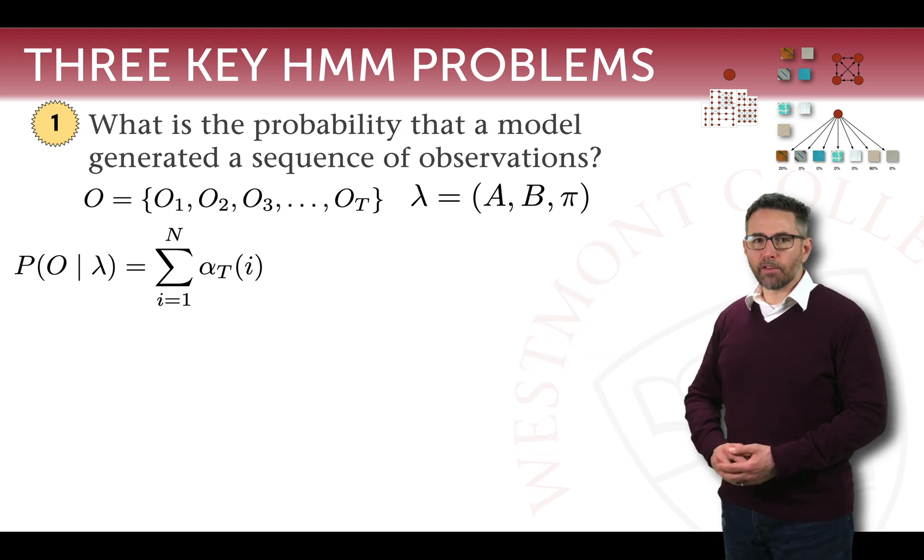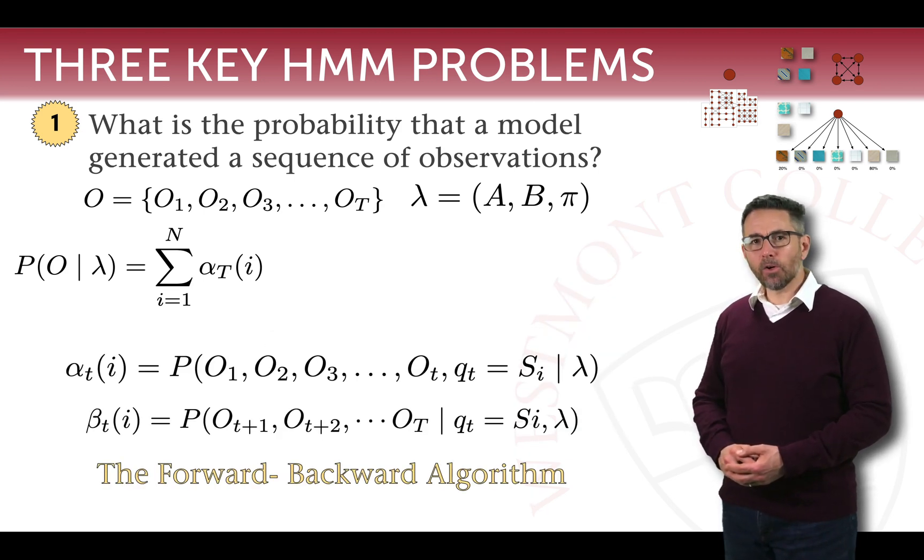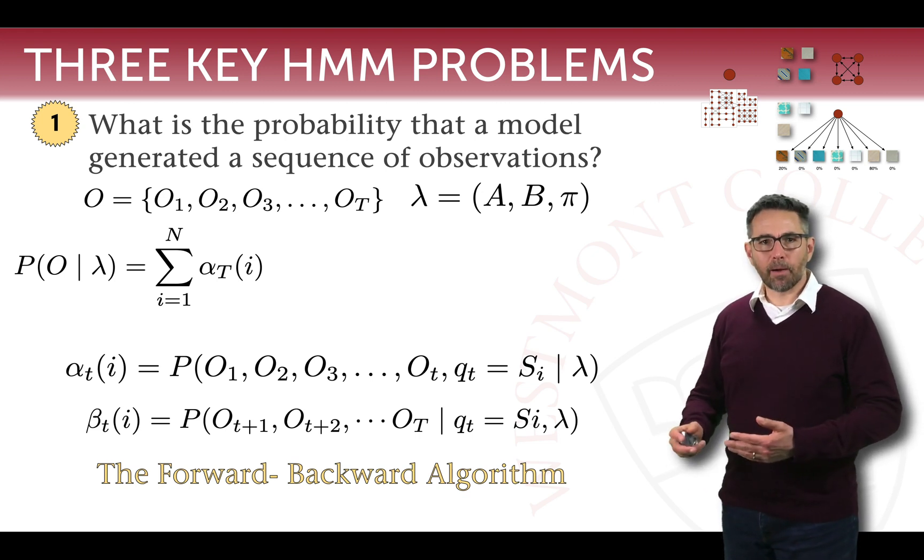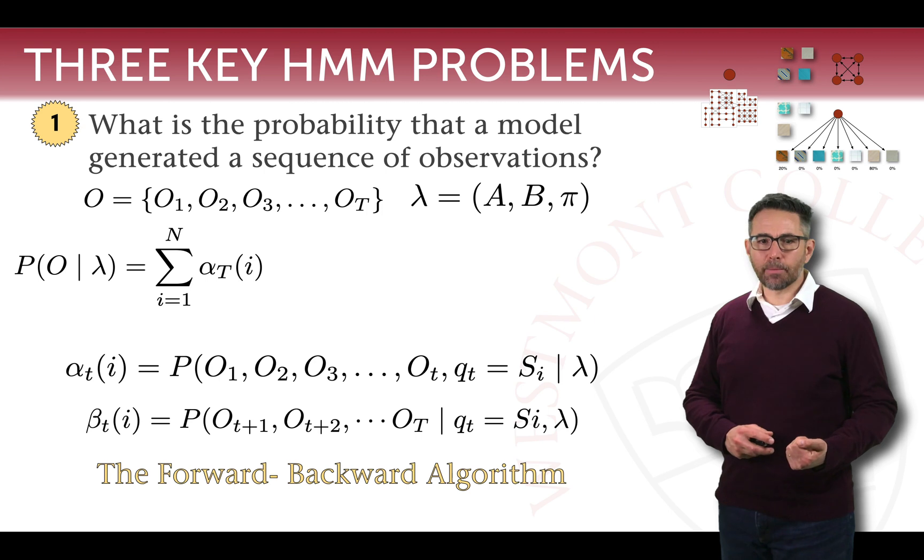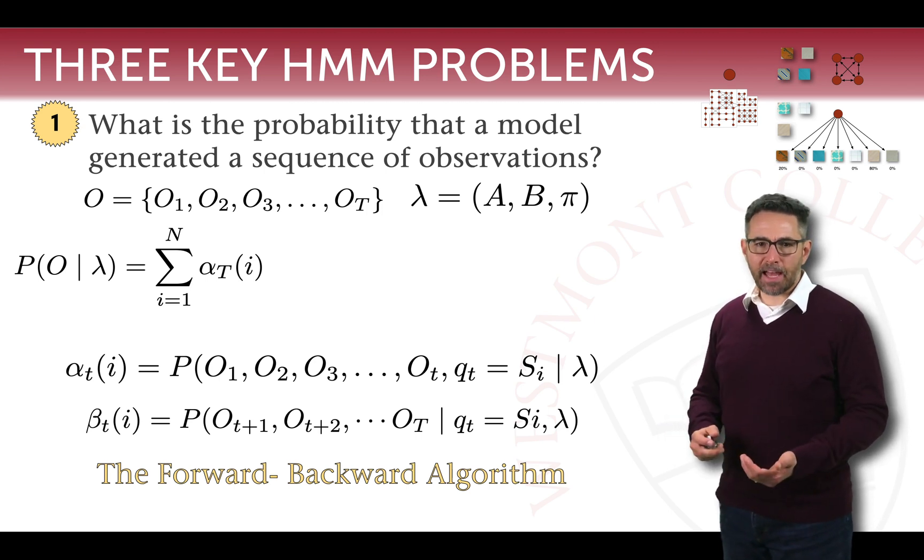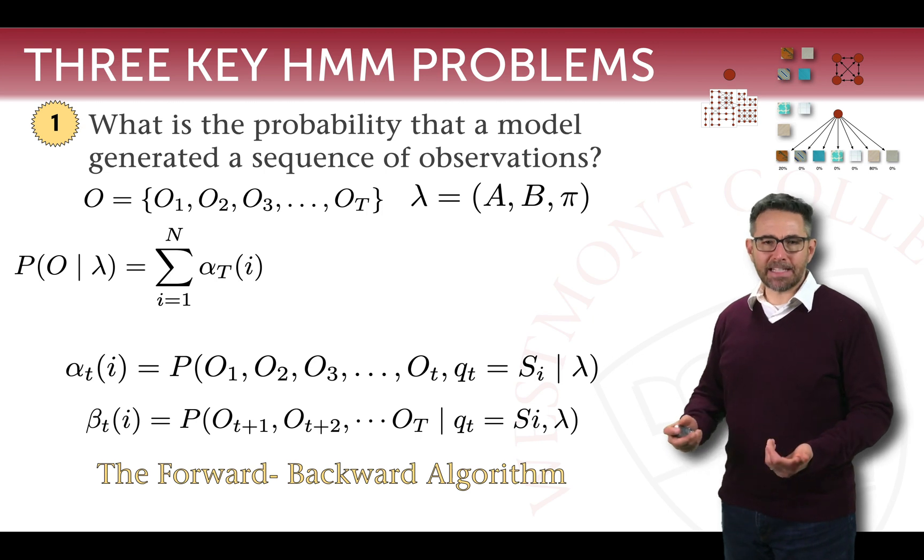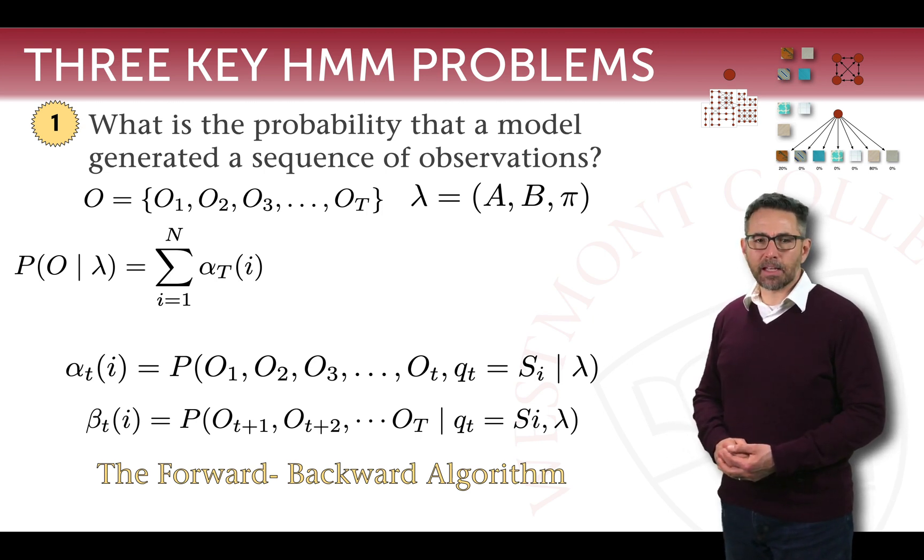That alpha term was called the forward term, and we had a corresponding term called beta which was the same algorithm but working from the final observation backwards. Alpha t of i says what is the probability of seeing the first lowercase t observations and then ending up in state i. Beta was the probability of being in state si at time lowercase t and then seeing the next set of observations up until time capital T.